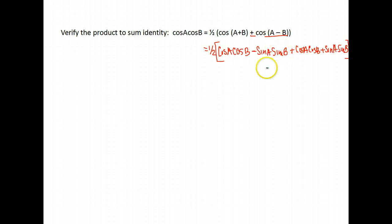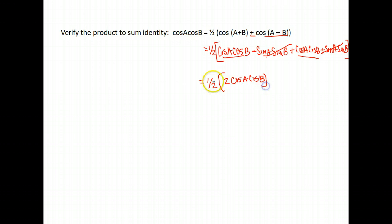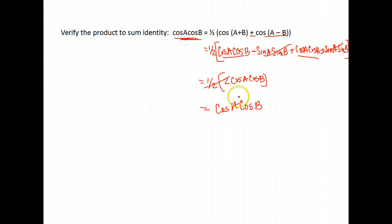Now let's simplify. We have a negative sine A sine B and a positive sine A sine B — those cancel to zero. We're left with cosine A cosine B plus cosine A cosine B, which gives us two cosine A cosine B's. One half times two is just one, so we get cosine A cosine B, and we've proven that the left-hand side is equivalent to the right-hand side.